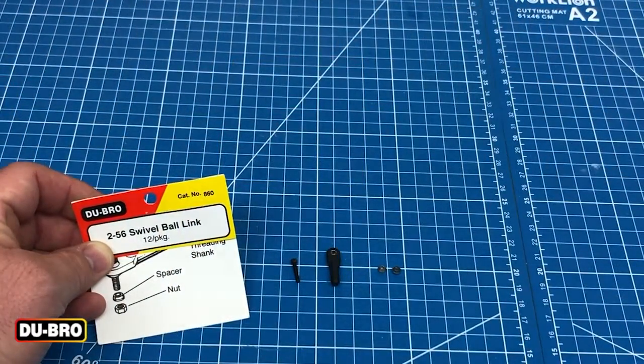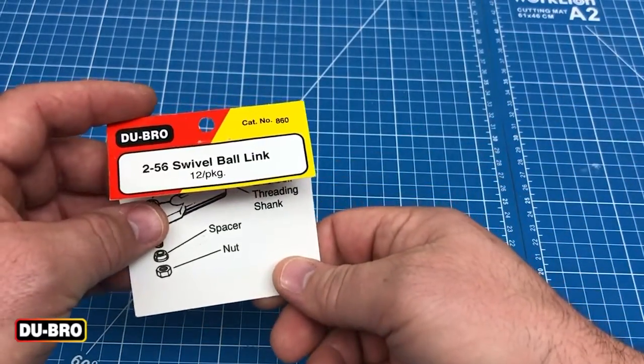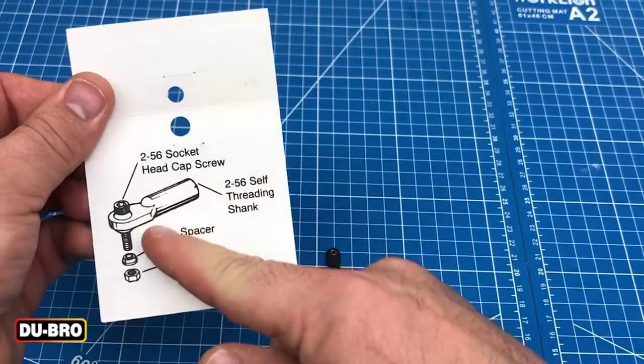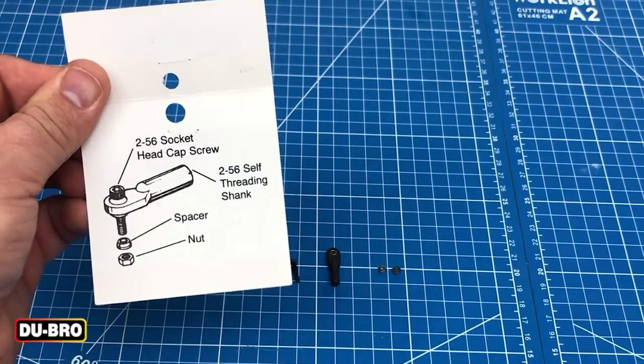The 256 swivel ball link package includes a product card that has an overview of how to install your swivel ball link.